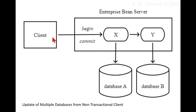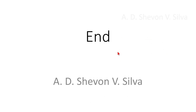Here the client is connected to X via begin and commit, which is inside the enterprise bean server. X and Y are inside the enterprise bean server. X is connected to database A, and X is also connected to Y, and Y is connected to database B. This is the end of the presentation, thank you very much for watching.